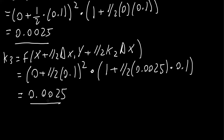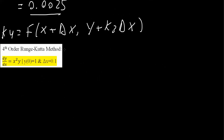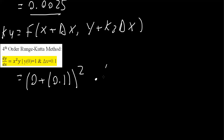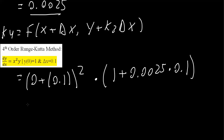k4 has a slightly different formula. k4 equals f(x + Δx, y + k3·Δx). So this equals (0 + 0.1)² times (1 + 0.0025 × 0.1). Using a calculator, we get k4 = 0.0100.